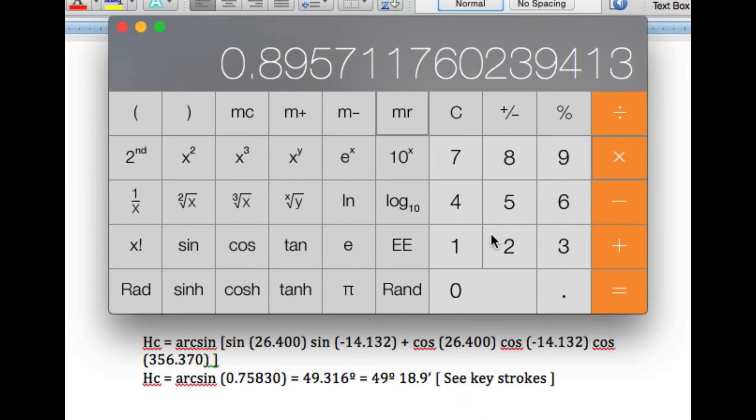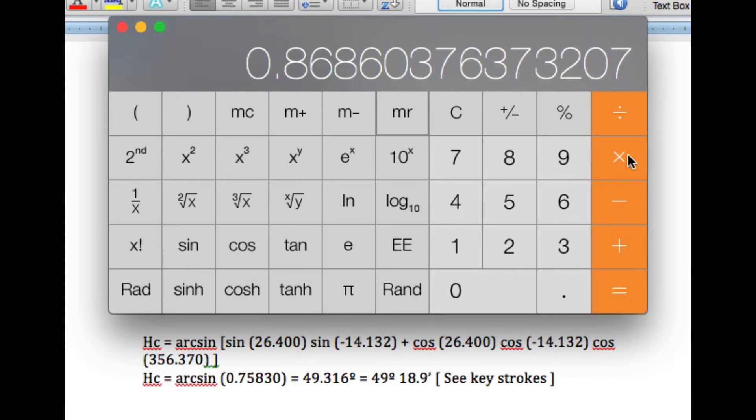And then 14.132, and I'll change the sign, probably doesn't matter there, and then cosine of that, equals. Now it's times once more.